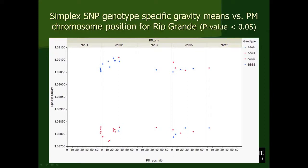That was Premier Russet. Now looking at Rio Grande — instead of six chromosomes, we have five chromosomes showing SNPs significant for specific gravity, and they were common with the Premier Russet. I thought that was good validation of potential QTLs to start with. We have the same color coding: blue is the homozygous condition and red is the heterozygote. You can see that a number of homozygotes were giving the higher specific gravity.